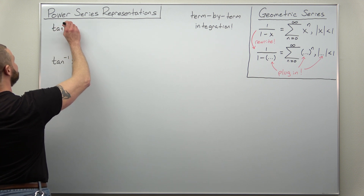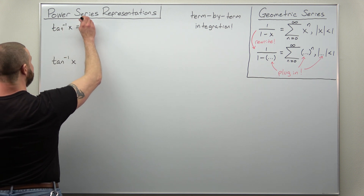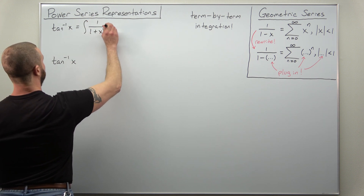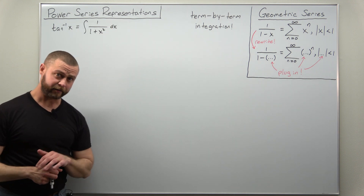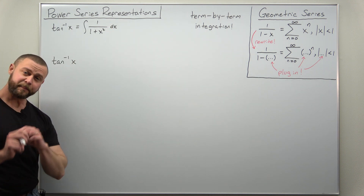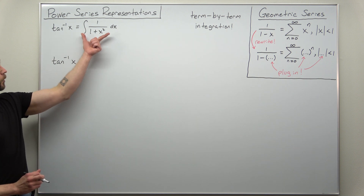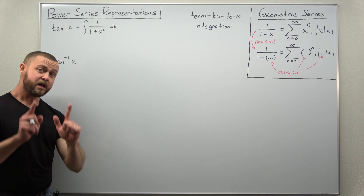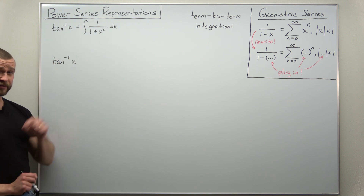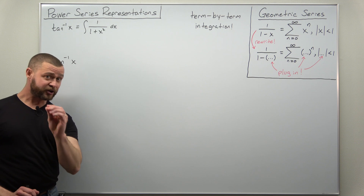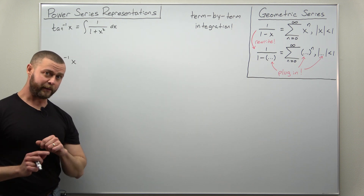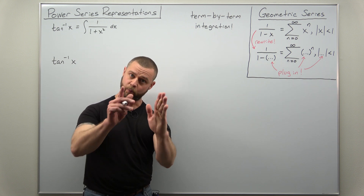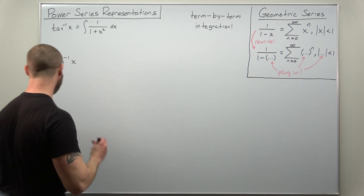We're going to think of inverse tangent of x as being the antiderivative of 1 divided by 1 plus x squared. This basically guides us — we're going to integrate the function 1 divided by 1 plus x squared. But first we need to find a power series representation for that fraction, which is going to be really simple to do as always with the geometric series.